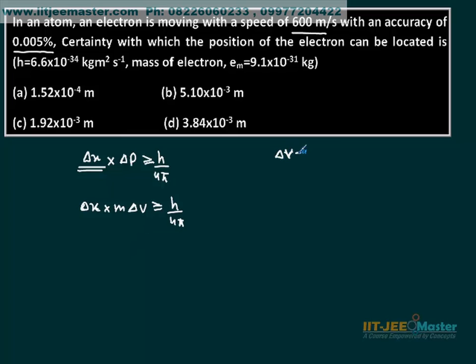Delta v is 0.005 percent. The velocity v is 600. So the value of delta v is the percentage of v, which is 0.005 times 600 divided by 100, which equals 0.03 meters per second.